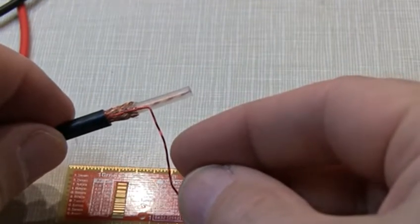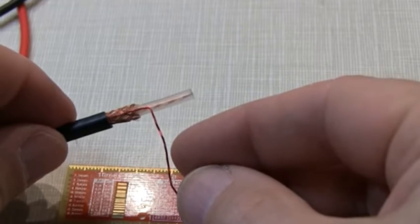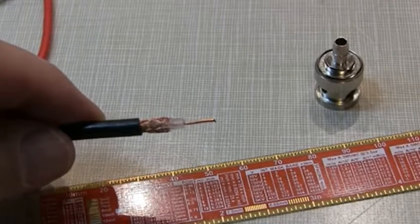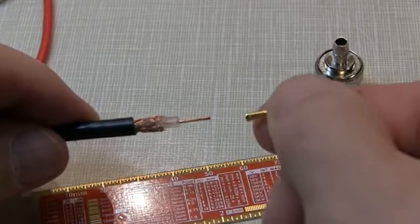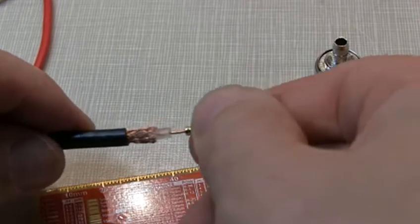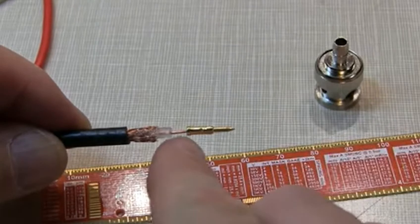In this case, it's in the neighborhood of about 11 to 12 millimeters, just under a half an inch. The next thing we want to do is trim the length of the center conductor. We can use the connector pieces as our guide again. We stick the center conductor on here and we can see how much length...